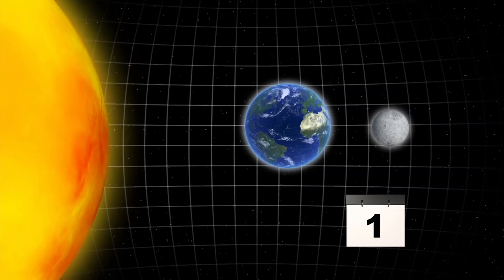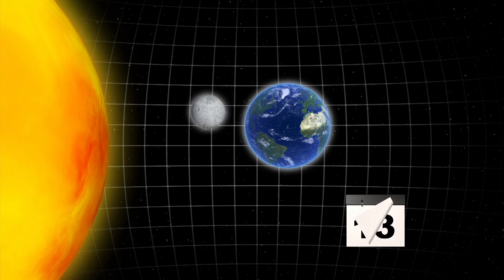NASA says Earth is in for a lunar trifecta of a super blue blood moon on January 31st, 2018. Lunar orbit of Earth follows a 29-day cycle.